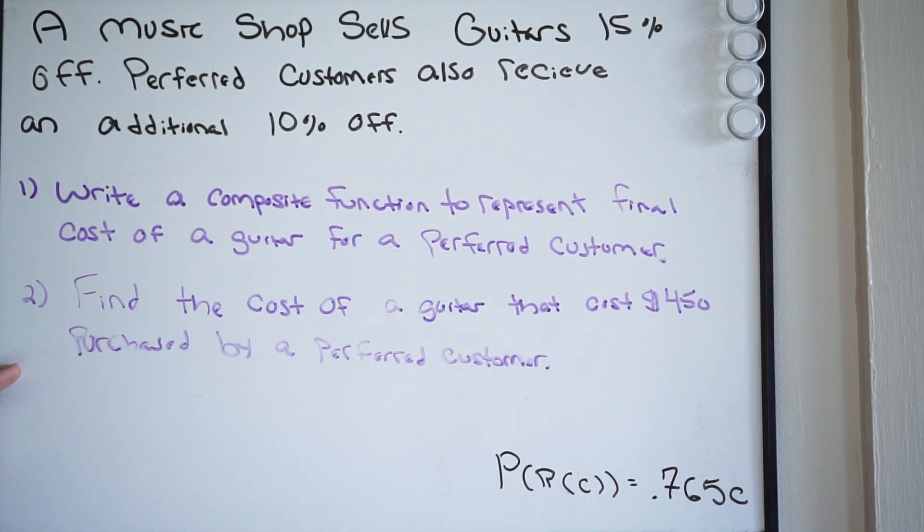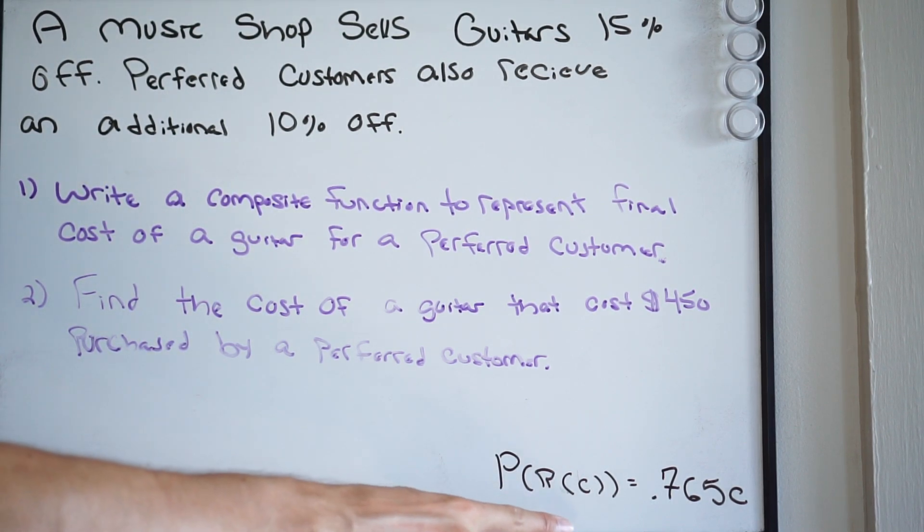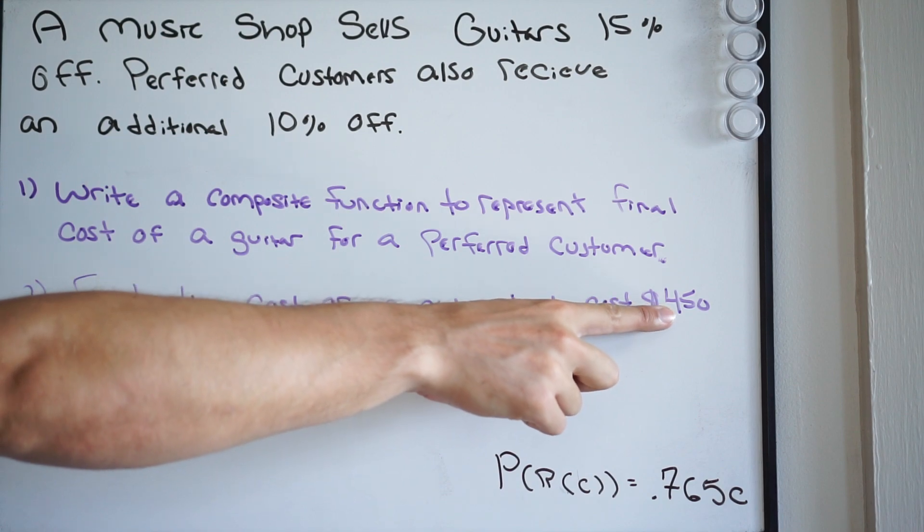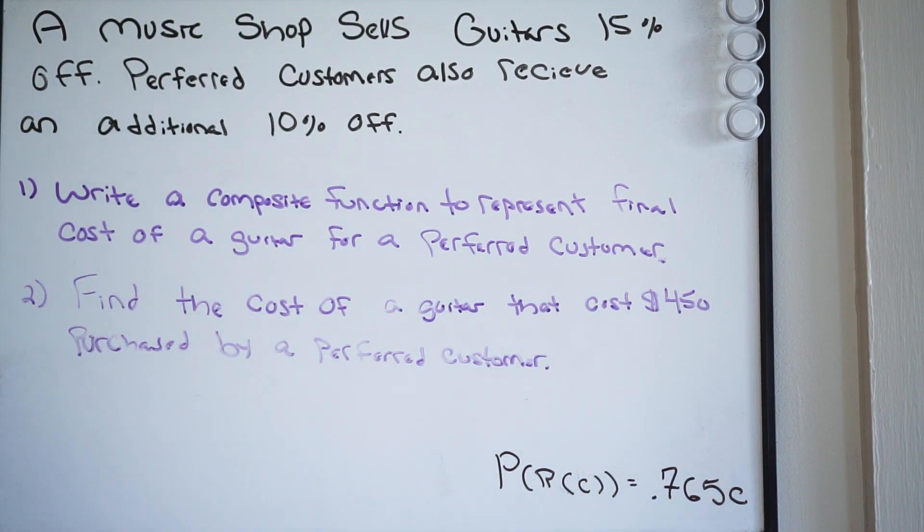Now, number two is asking us to find the cost of the guitar that costs $450 purchased by a preferred customer. So again, since we already have our composite function written, all we have to do now is take this cost and plug it in here. And that's going to give us the final cost of the preferred customer.